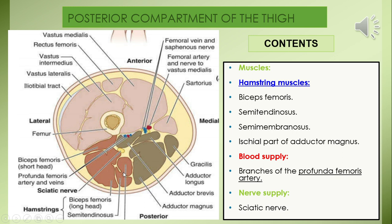A large nerve, the sciatic nerve, is a main content visible in the diagram. Enumerating the contents of the posterior compartment of the thigh: we include the hamstring muscles — biceps femoris, semitendinosus, semimembranosus, and the ischial or hamstring part of adductor magnus — then the arteries supplying the posterior compartment, mainly branches of the deep femoral artery or profunda femoris artery, and then the sciatic nerve, which is the largest nerve of the body.